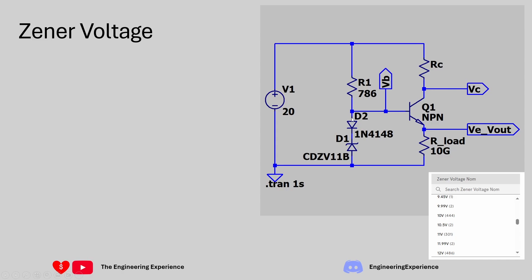I've modified the circuit slightly because looking at Farnell, they don't have many 10.6 volt Zener diodes - they have a few 10.5s but only two available. So for this circuit I'm going to select a 10 volt Zener and add a silicon diode in series, which will produce 0.6 volts. That means the base voltage will be the Zener voltage of 10 volts plus 0.6 volts, giving us the 10.6 volts we need on the base to get 10 volts on the output. This is the slightly modified circuit not shown in the book.